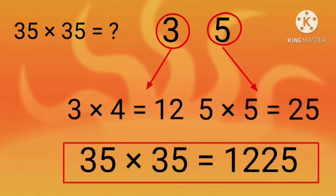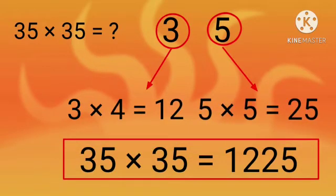3 and 5. Multiply 3 by its successor, the next natural number 4. So 3 multiplied by 4 is 12. Multiply 5 by itself. So 5 multiplied by 5 is 25. So the answer is